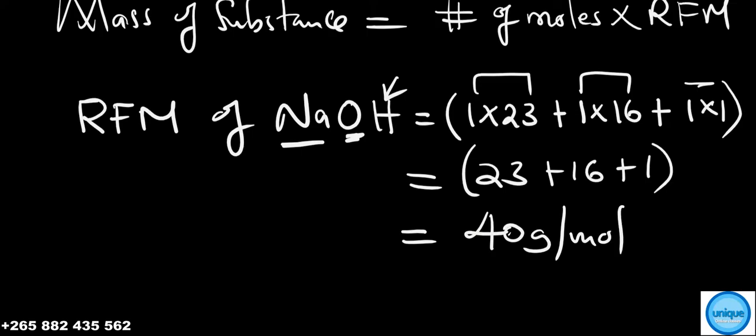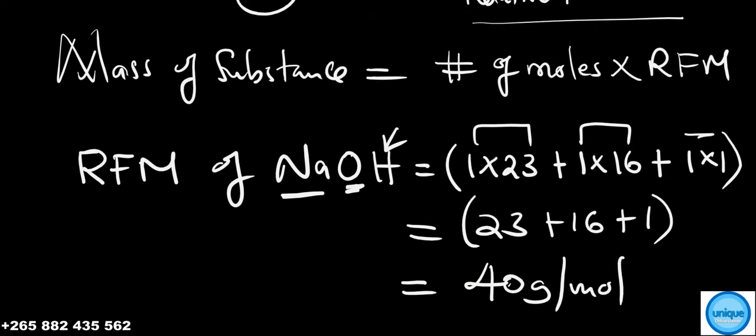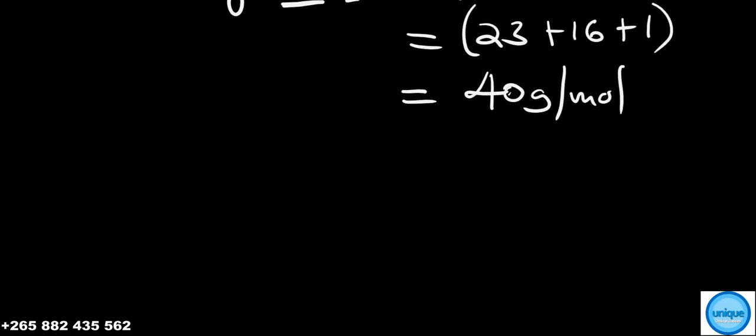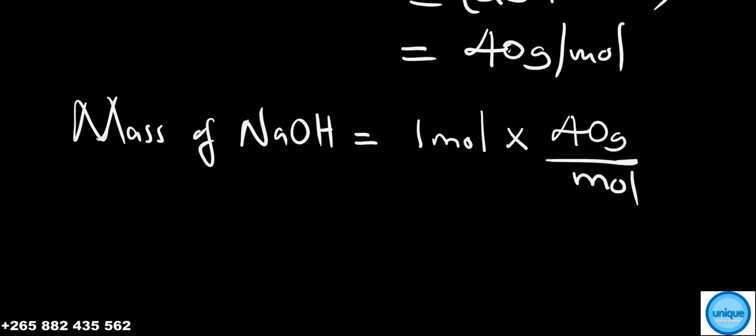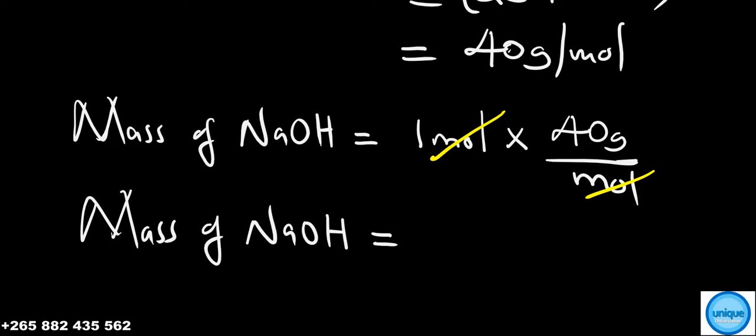Using this formula, mass of NaOH equals number of moles times relative formula mass. We have 1 mole times 40 grams. One mole cancels, so the mass of NaOH is equal to 40 grams.